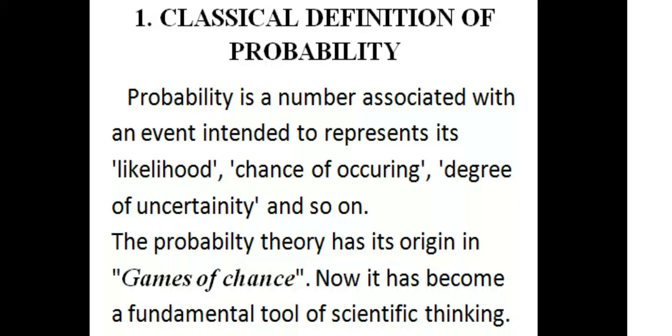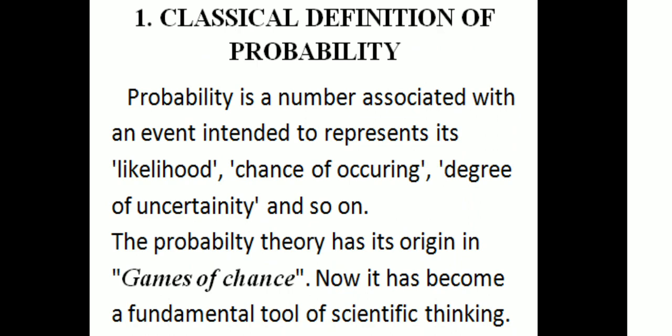In the second semester, we will discuss the classical definition of probability. The probability term is the same — the probability of rain tomorrow, the probability that an electric appliance will be defective, or even the probability of nuclear war. The probability is a number associated with an event intended to represent its likelihood, chance of occurring, degree of uncertainty, and so on.